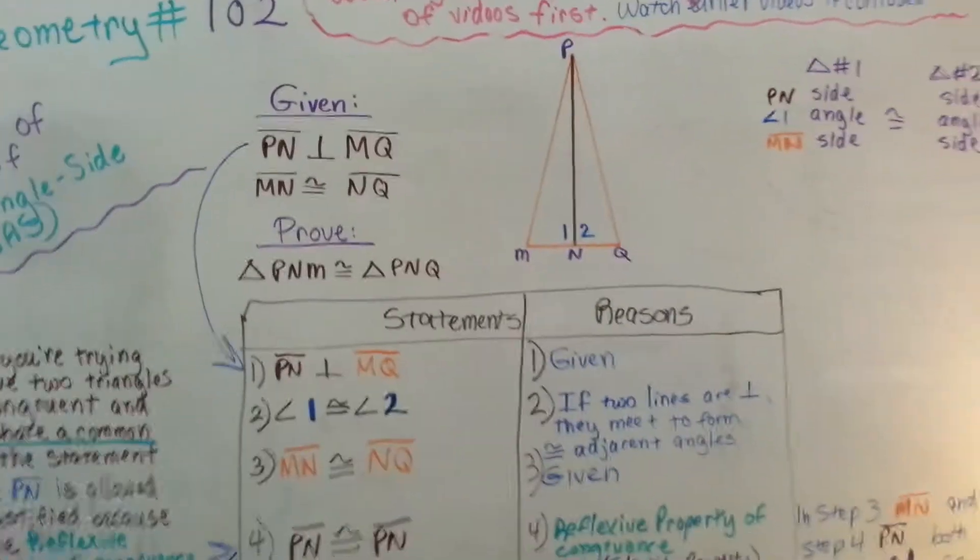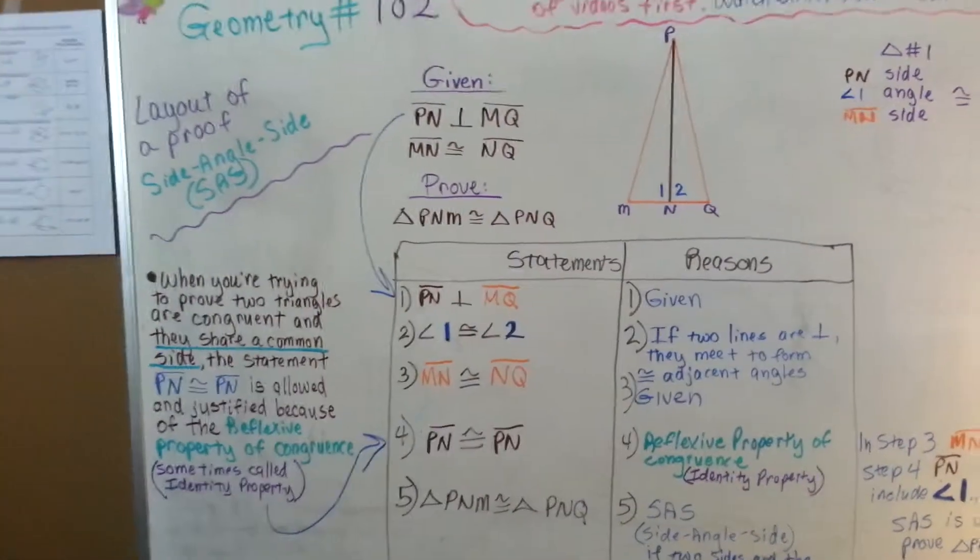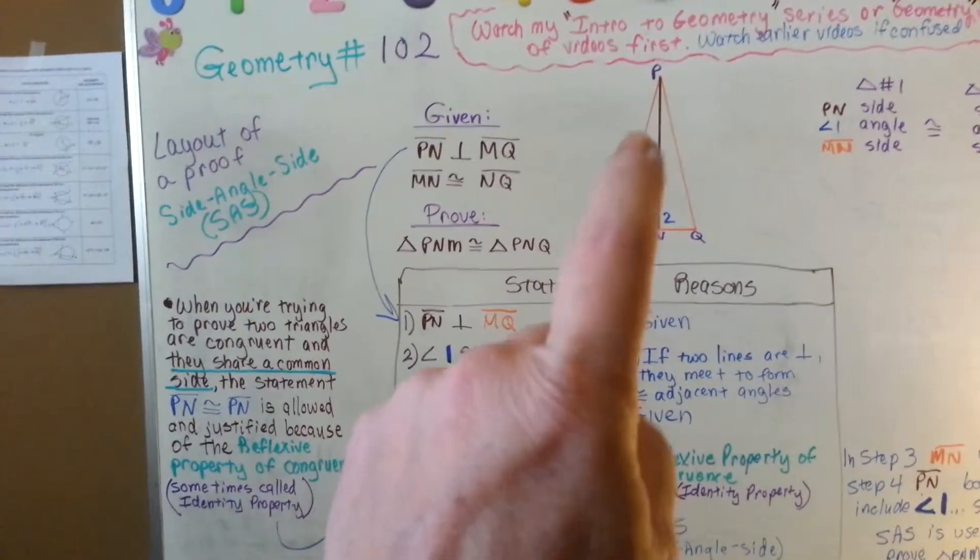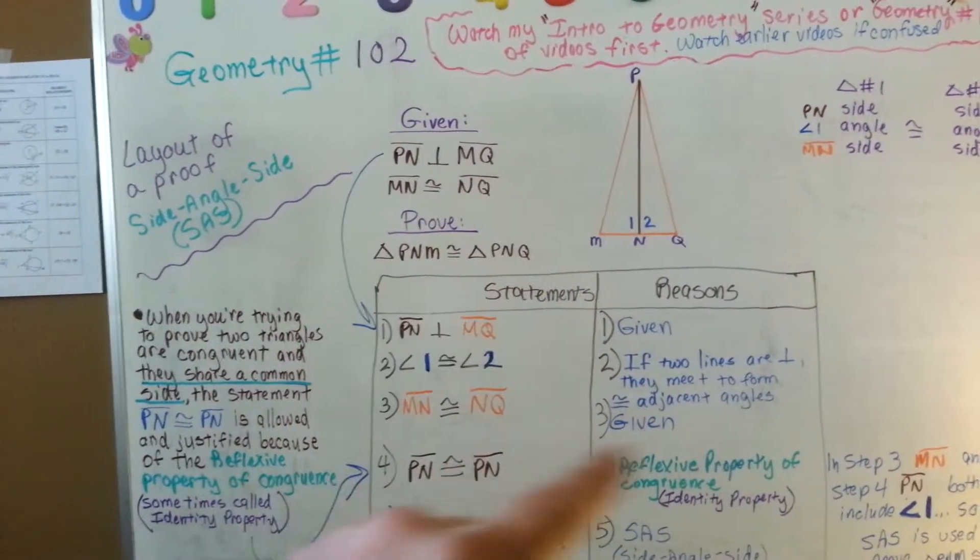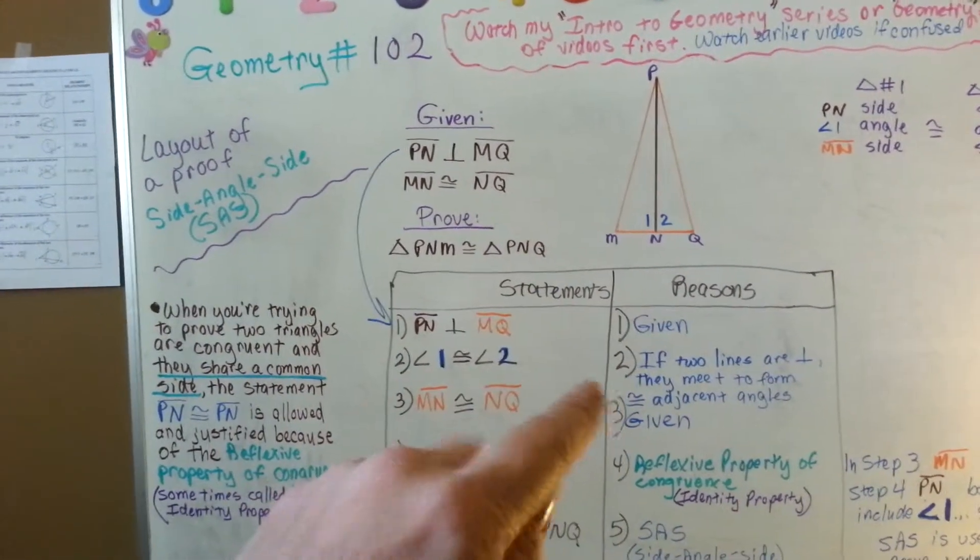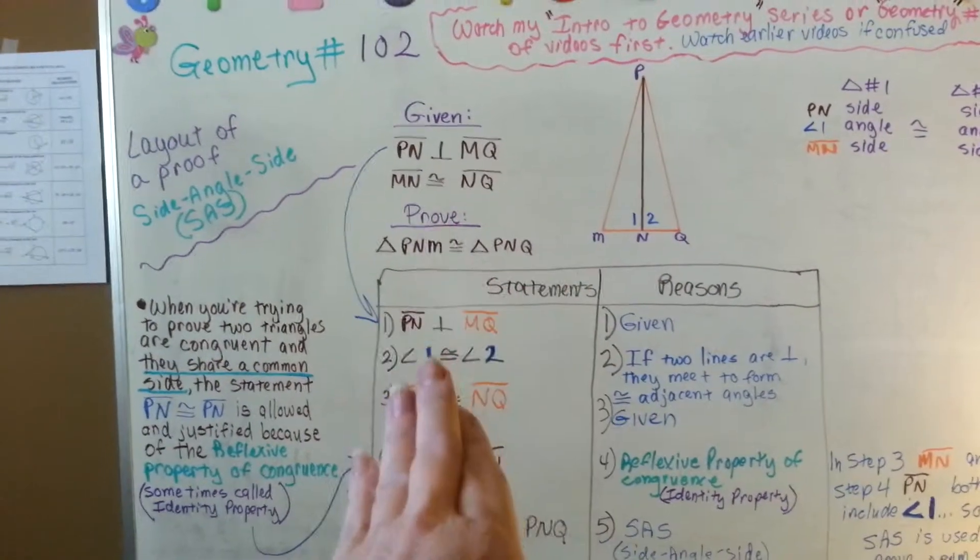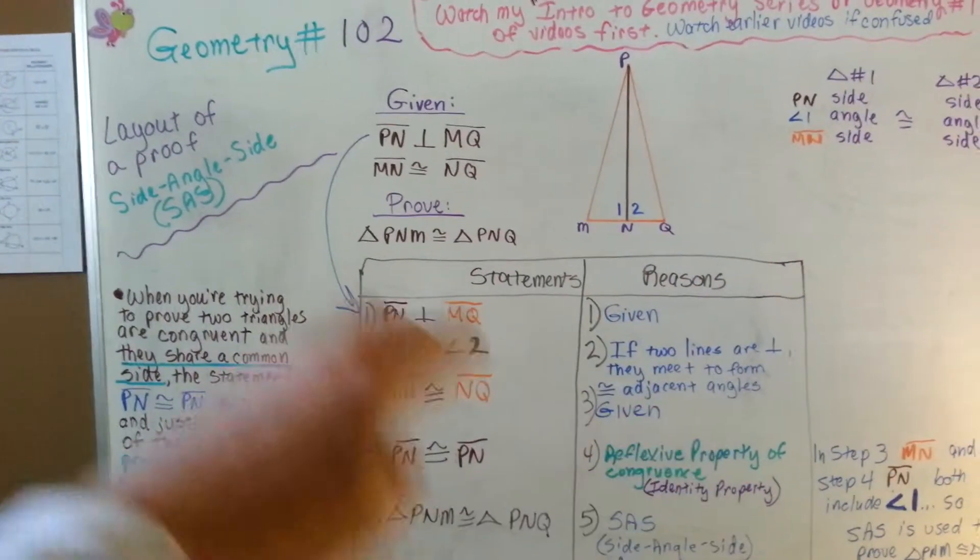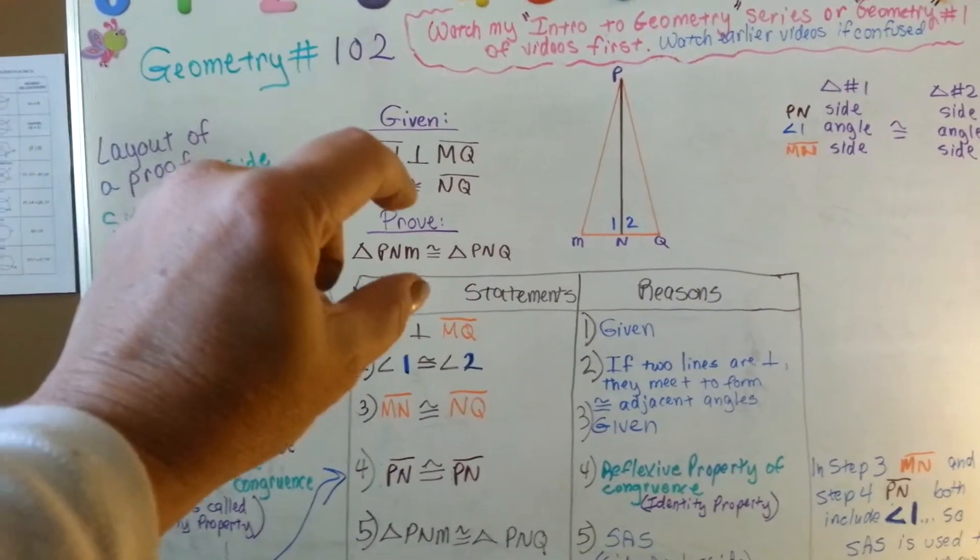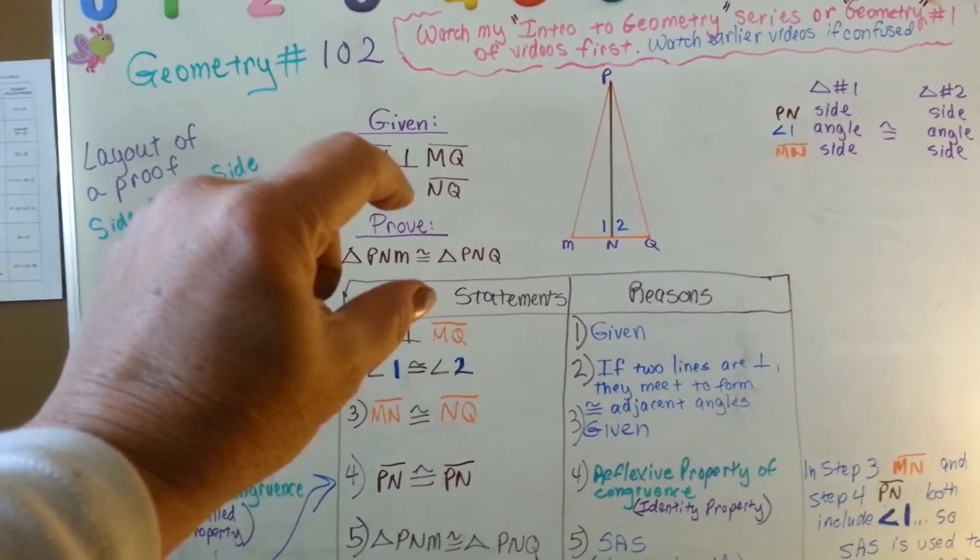So let's take a step back and see what we've got here like I always do. We've got our drawing which we need so that we can make sense of all of this. We have our proof table with our statements on the left and our reasons on the right. We have our given, which is our evidence, and we have our prove, the thing we're trying to prove.